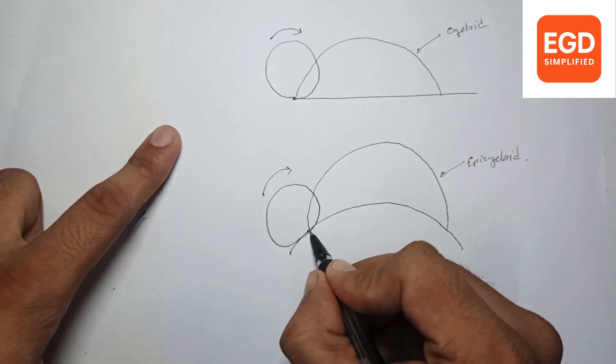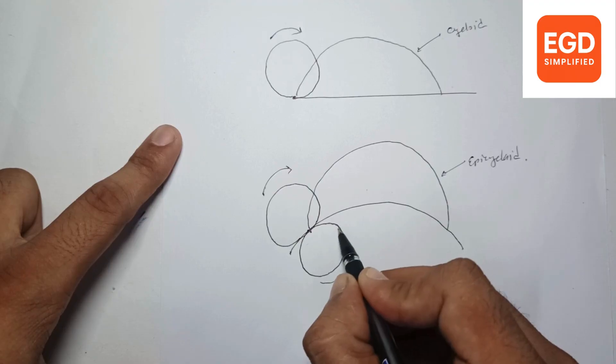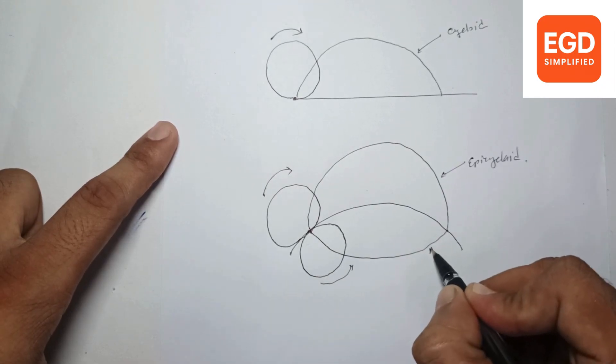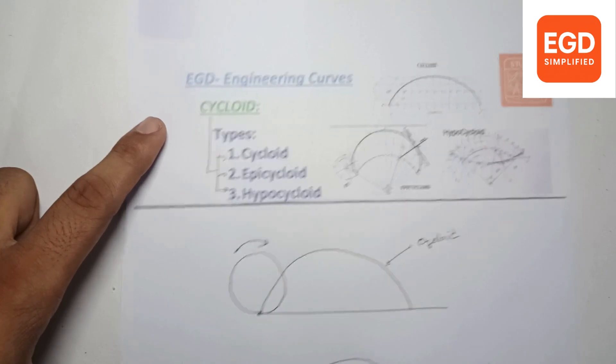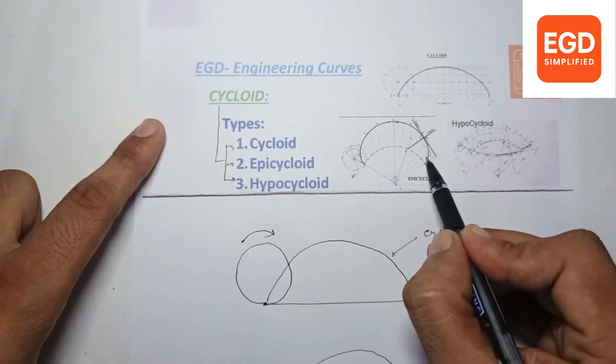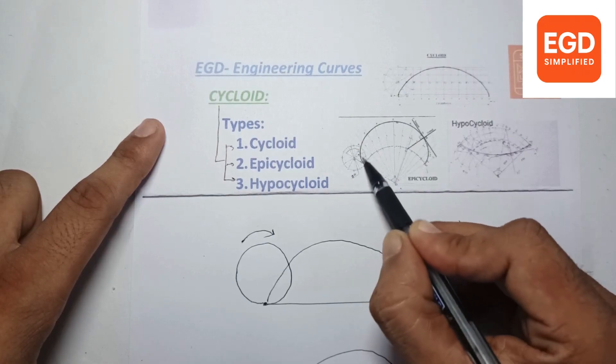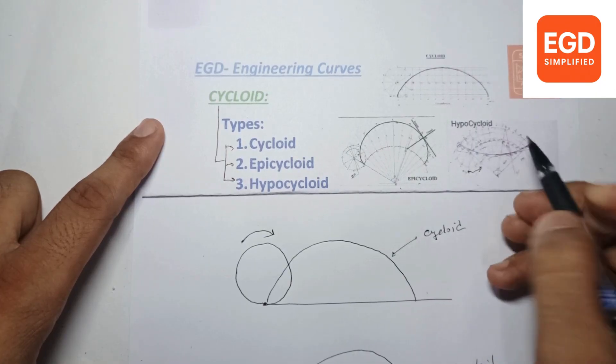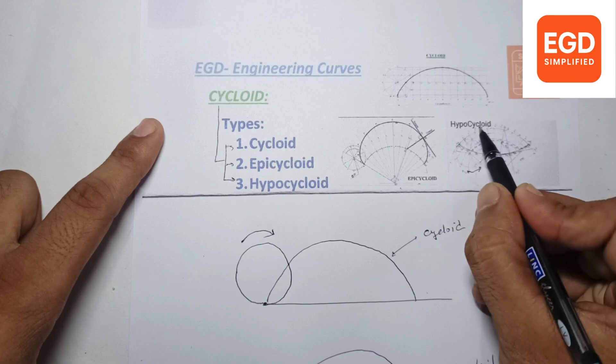Suppose a circular entity rolling inside another circular entity without slipping, and we are tracing the path of a point which is on the circumference of a circle. The curve we will get is called hypocycloid.